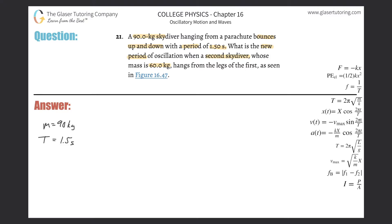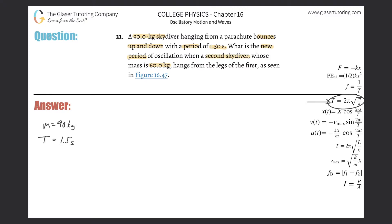What can we find out by knowing the mass and knowing the period and knowing that this is simple harmonic motion? We have a formula that relates the period, the mass, and the spring constant: the period is equal to 2 pi times the square root of the mass divided by the spring constant. If I know the period and I know the mass, I can solve for k — that's the only unknown.